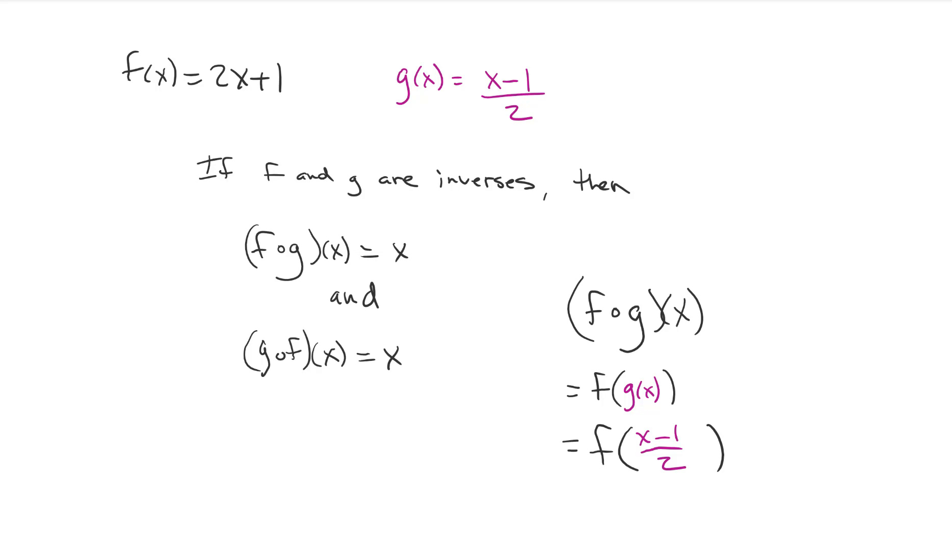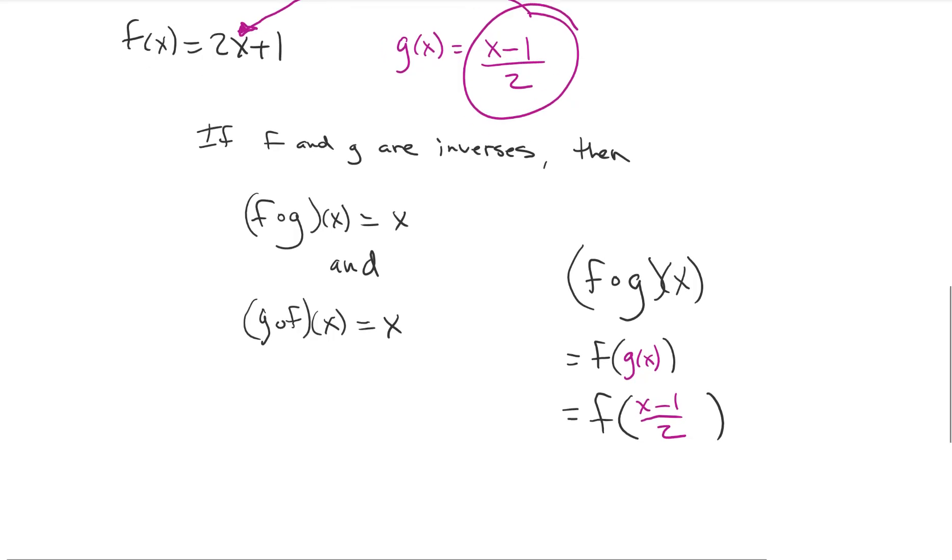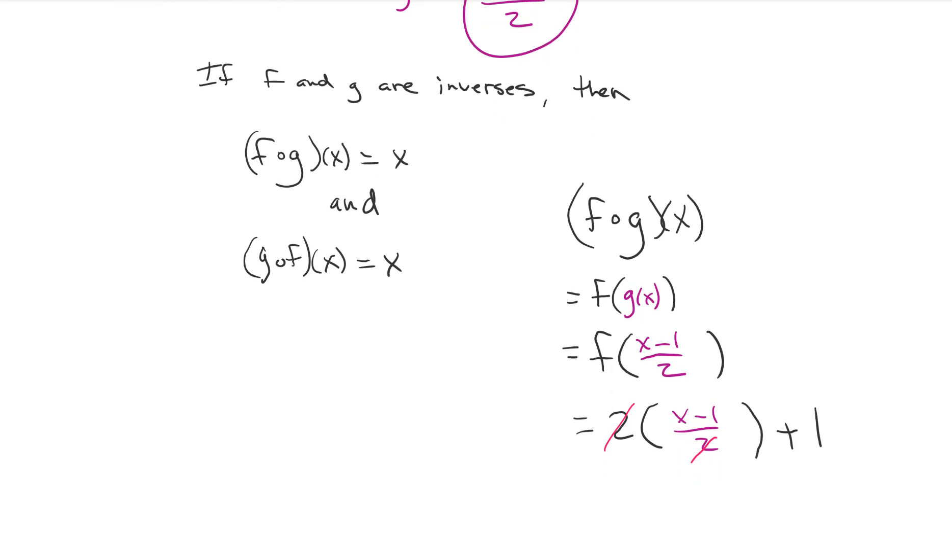So now we're like, okay, we're going to take that x minus 1 over 2, and we're just basically plugging it in for x. So let's rewrite that. So it's 2 times something plus 1. But watch how all this stuff is just going to fall out. Our x minus 1 over 2. Look at this. What's negative 1 plus 1? Boom. That equals x.